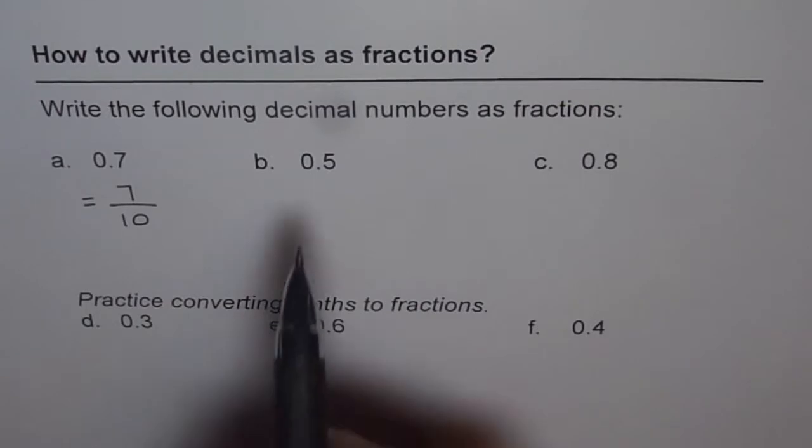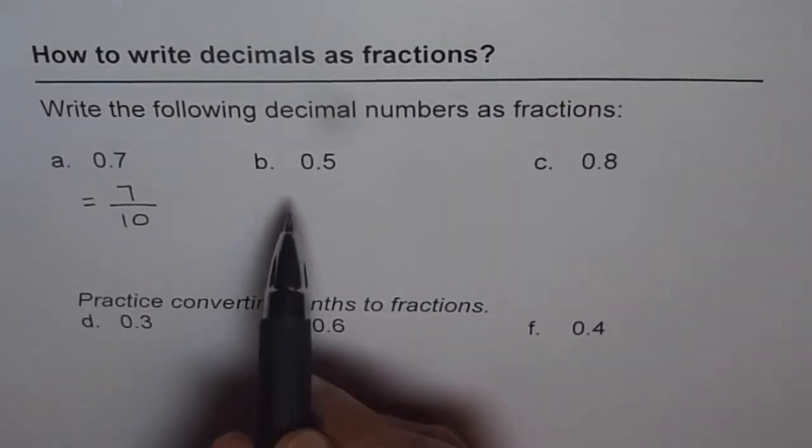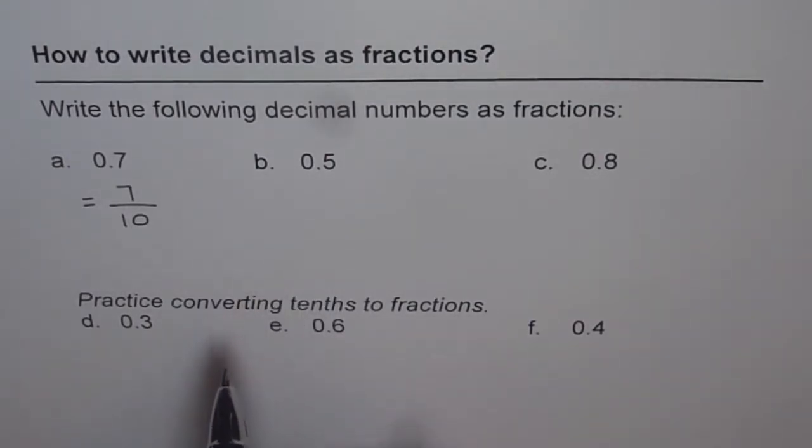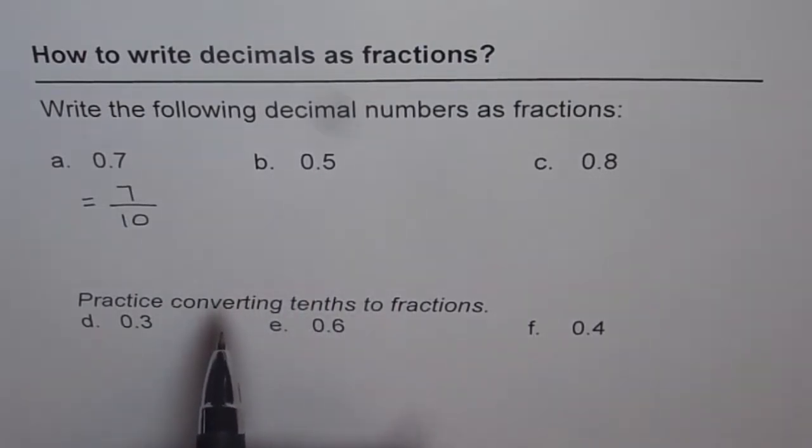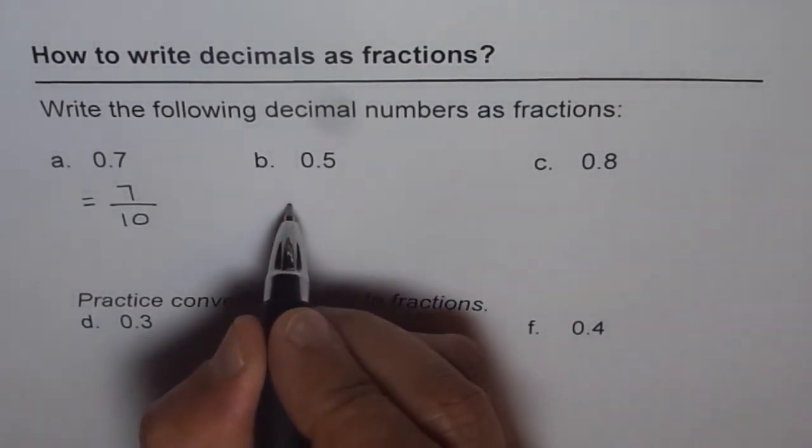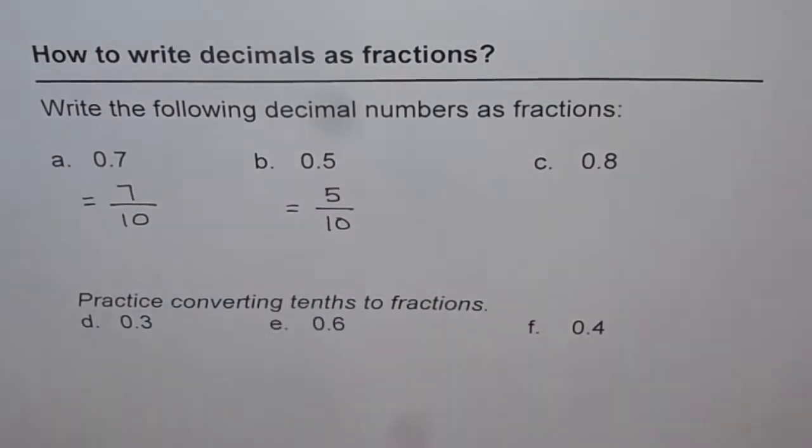Now let us write down 0.5 as a fraction. 0.5 is read as five tenths. This is the tenth place. So in fractions, if you have to write 0.5, you should write this as five out of ten. That is five tenths.